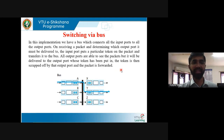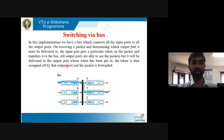Switching via bus. In this implementation, a bus connects all input ports to all output ports. On receiving a packet and determining which output port it must be delivered to, the input port puts a particular token on the packet and transfers it to the bus. All output ports are able to see the packet, but it will be delivered only to the output port whose token has been put in. The token is then scrapped off by that output port and the packet is forwarded.